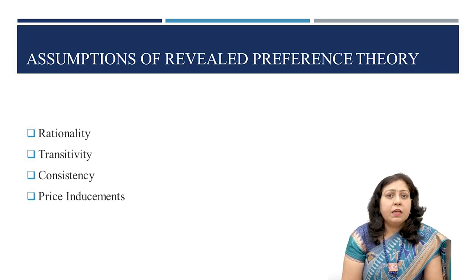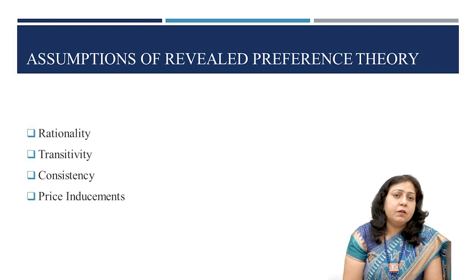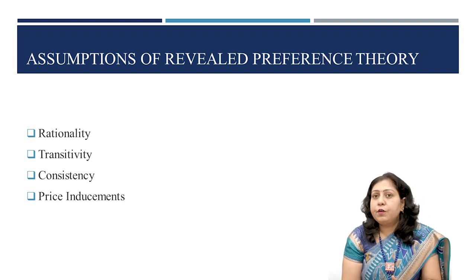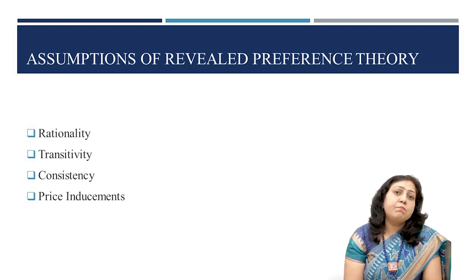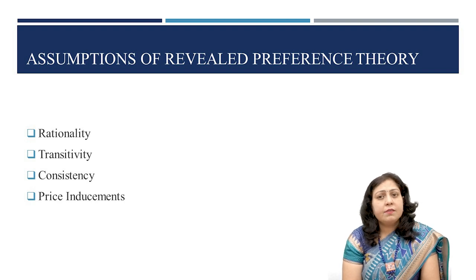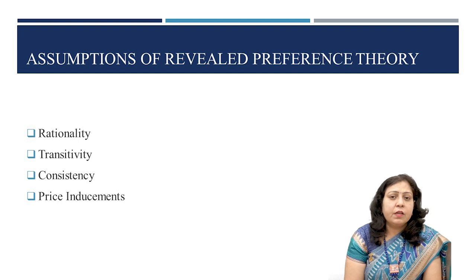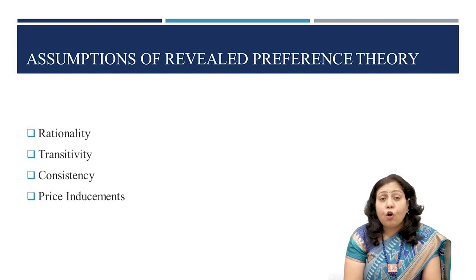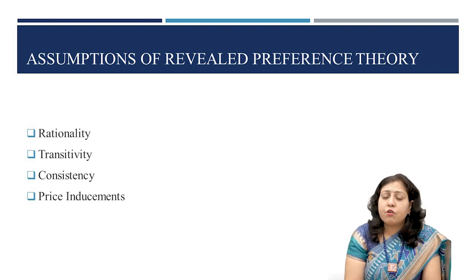The second assumption is transitivity. As per this assumption, if a consumer prefers bundle A to bundle B and prefers bundle B to bundle C, then the consumer must prefer bundle A to bundle C. Hence, consumer preferences are transitive, meaning that preferences are logically consistent and do not lead to cycles or contradictions.